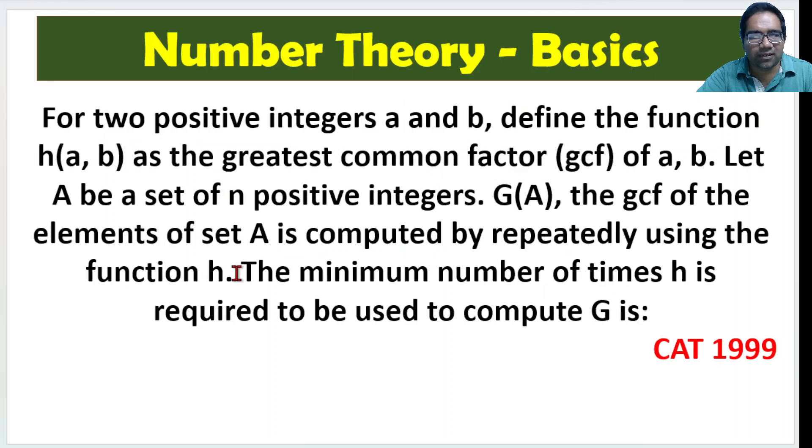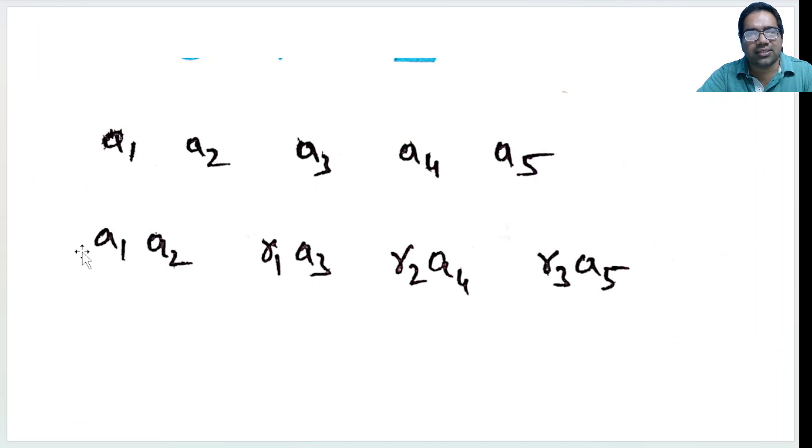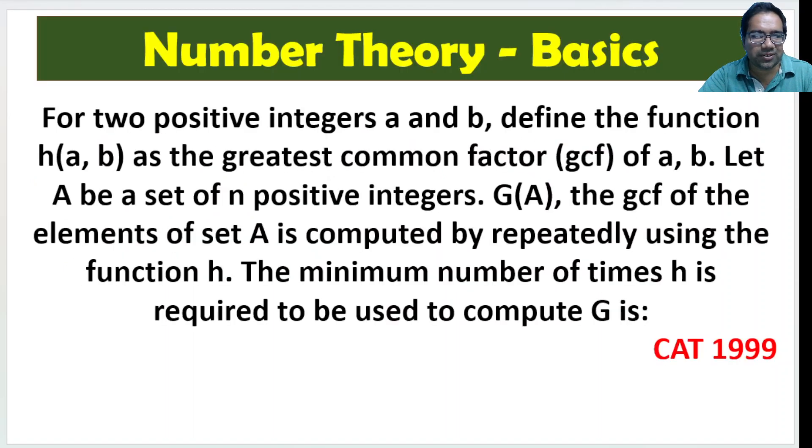Similarly, if there are n elements, number of times, how many times we have to use? It is n minus 1, right guys? So n positive integers are there, that means we have to do this operation n minus 1 times. When there are 5 integers, we did it 4 times. When there are n integers, we have to do n minus 1 times. It is a pretty straightforward problem, just that it looks very verbose. You just need to ignore all that unnecessary information.